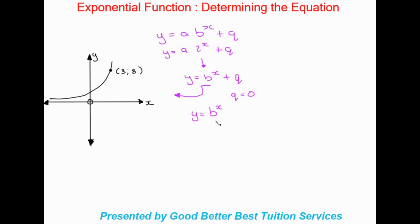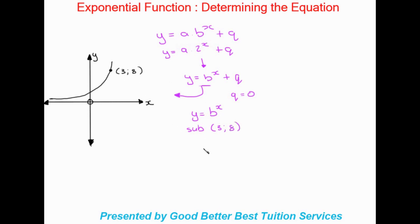Therefore the equation already looks like y equals b to the power of x, since we have no q value. We now have only one unknown, and all we need to do is substitute in an x and y value from the graph — in this case that would be x equals 3 and y equals 8.